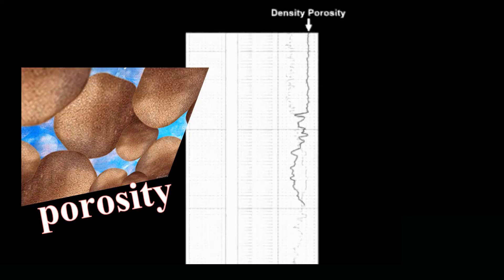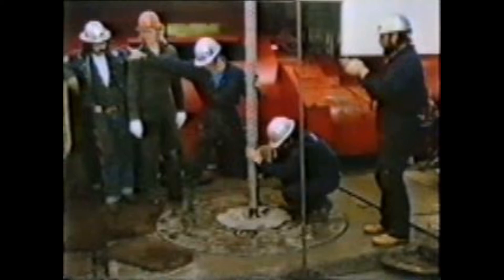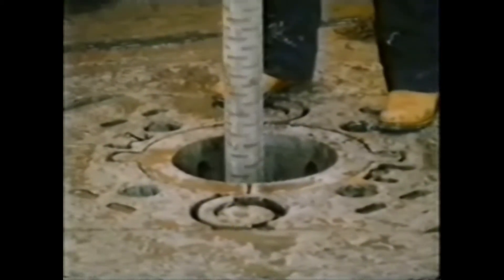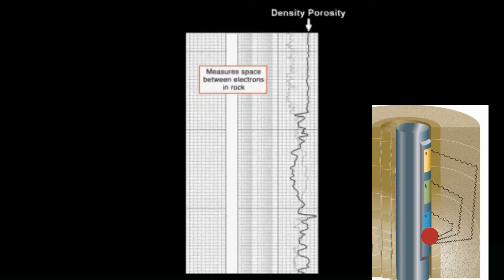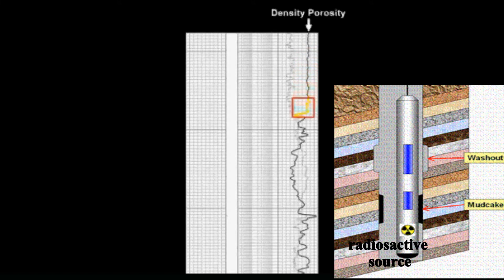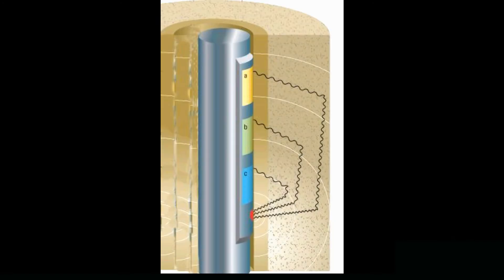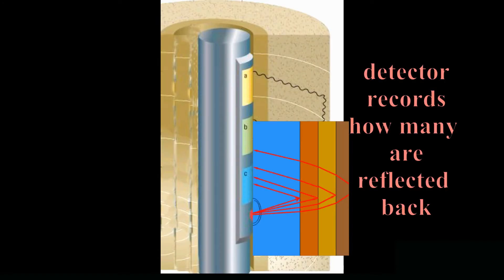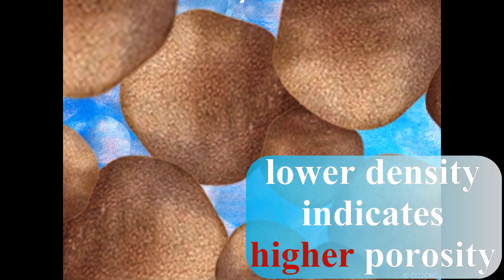The following three types of logs are used to measure the porosity of the well: the density log, the neutron log, and the sonic log. The density log is made by a radioactive source placed into the sonde that records the emissions of gamma radiation. These high-intensity emitted gamma rays are directed into the formation, and a detector records how many are reflected back to the sonde. The more gamma rays reflected back, the lower the formation's density. A lower rock density reading indicates higher porosity.